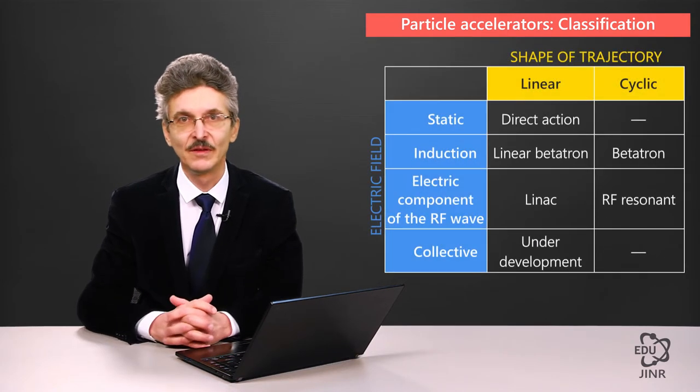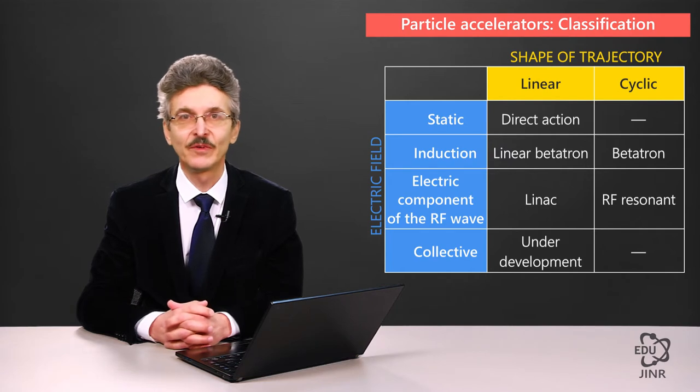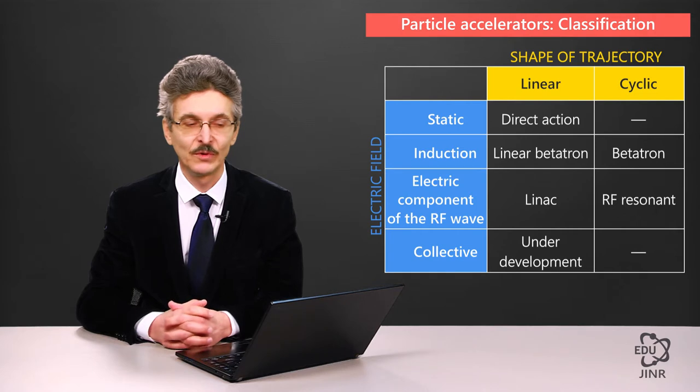Accordingly, if we compile both principles in a table, we get the two classification principles, by the electric field type and by the form of the trajectory.